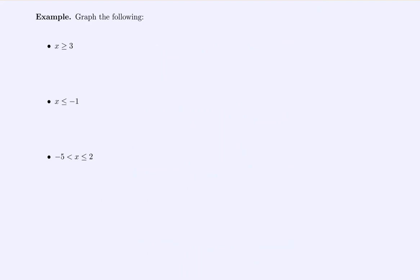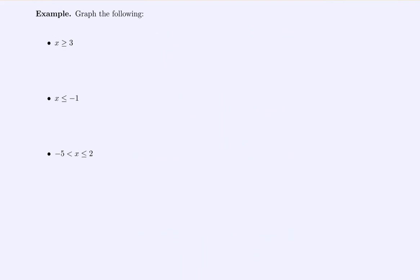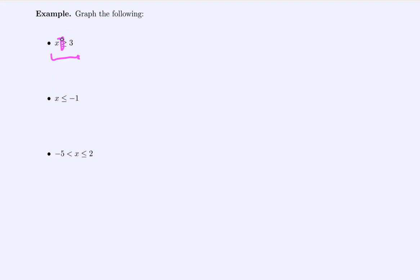We're asked to graph the following. Take a moment to think about how you would read this out loud. Notice the smaller angle is pointing towards the three, the bigger part of the angle is pointing towards x, and we do have the 'or equal to' line.